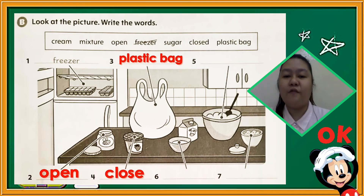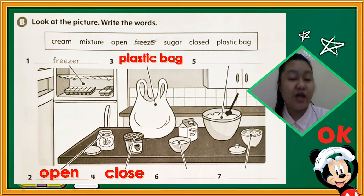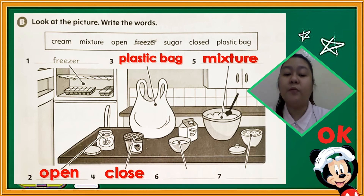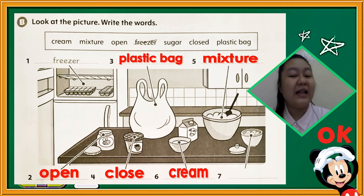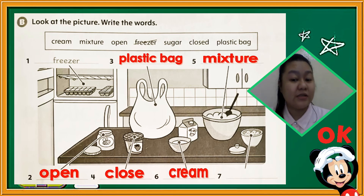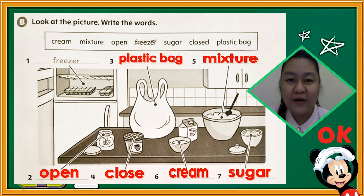Now number 5: what do you call this one — putting all the ingredients inside? Mixture — very good. Number 6: what do you call this thing inside the bowl? Cream. Last one — what are these inside the bowl? Sugar. Very good.